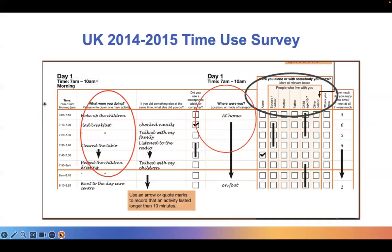The research took a different approach. We produced different measures of family time using three diary columns that you can see noted in this picture: the main activity column, the location column, and the co-presence column.